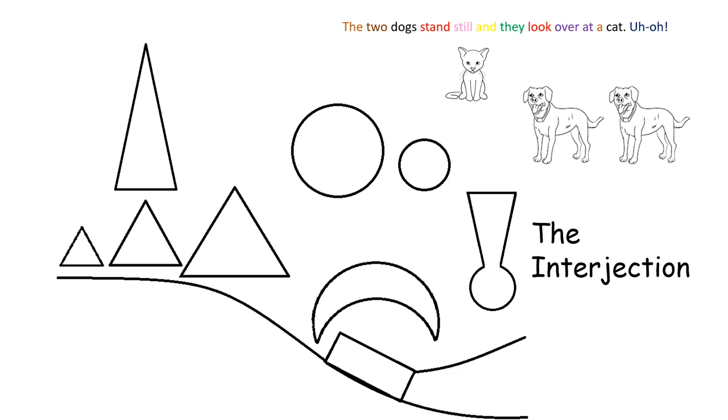You can see that I've added two words, uh-oh, followed by an exclamation mark. The words uh-oh are colored blue for the interjection. The interjection is used to express my concern and my worry about what will happen when those two dogs see that cat.